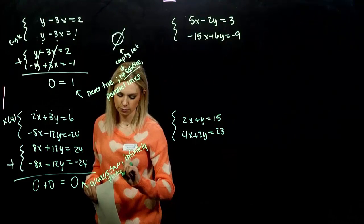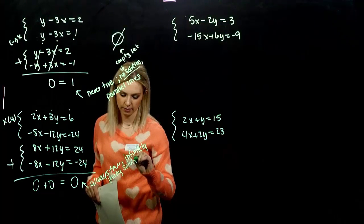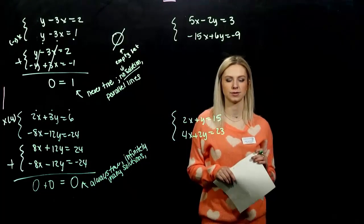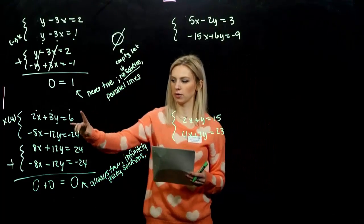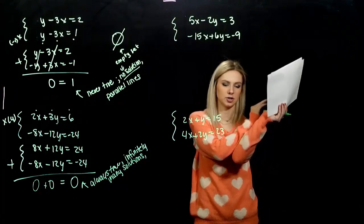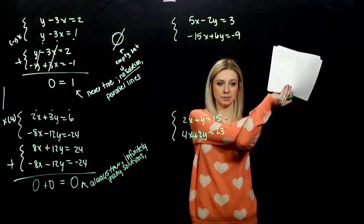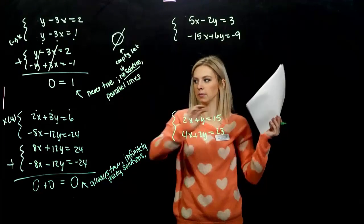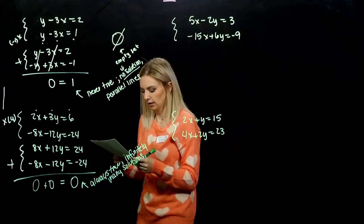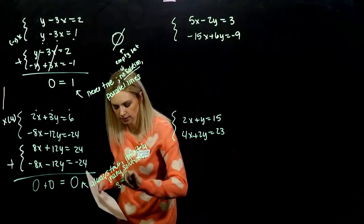Infinitely many solutions. We can plug in whatever we want and we're going to satisfy both at the same time. So, what does that tell me about these two? They're the exact same lines. They're lying right on top of each other. And when I satisfy one, I'm satisfying the other at the same time. It just looks different, but it is the same line.